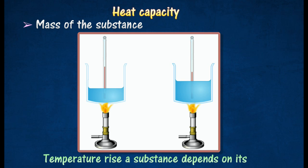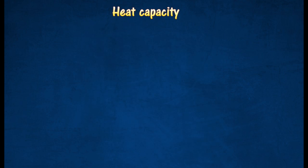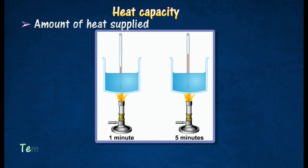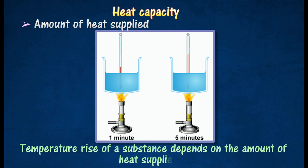The water in the first beaker is heated for one minute while the second beaker is heated by the same burner for five minutes. The temperature of the first beaker is lower than the second beaker, which shows that the temperature rise of a substance depends on the amount of heat supplied.